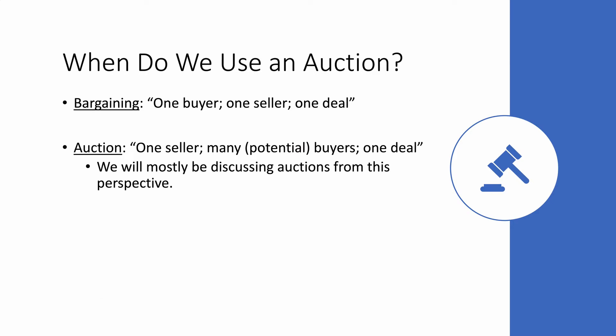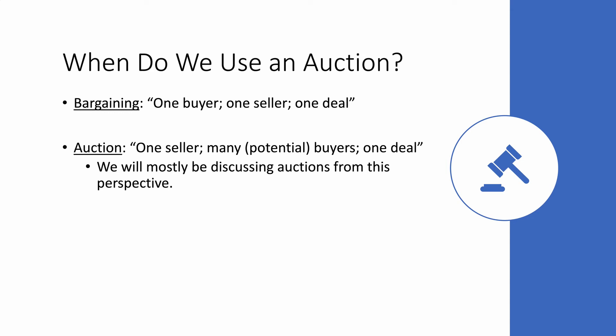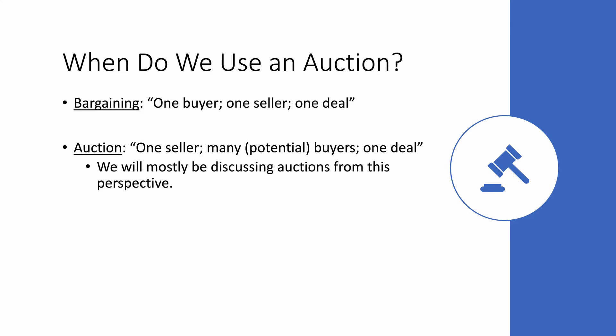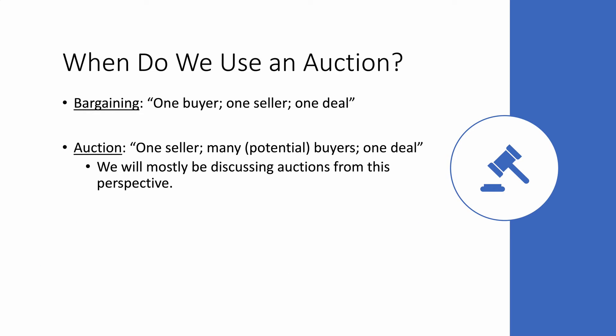So when do we use auctions? Here are two commonly used pricing formats: bargaining and auction. For bargaining, usually we have one buyer, one seller, and they can reach one deal — essentially a negotiation table. For auctions, usually the case is we have one seller — only one Mona Lisa — and many potential buyers, so there's one deal and eventually the highest bidder gets to keep the product. This is the most common perspective we'll discuss from auctions.